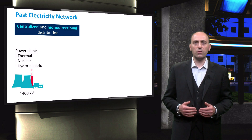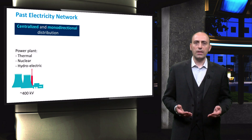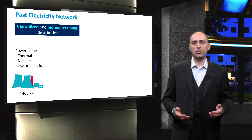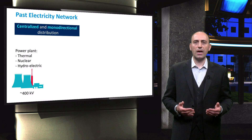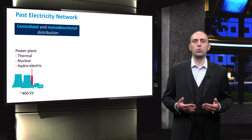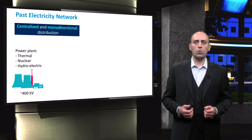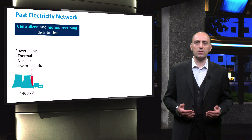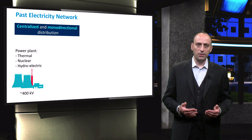At one end of the electricity grid we have the power plants, which are the only structures generating electricity. They can be divided into three major groups. First, the thermal power plants — these plants generally burn gas or coal and boil water to superheated steam, which in turn runs a turbine. The second group are the nuclear power plants, which use the heat released by the fission of radioactive elements to generate electricity. Finally, there are the hydroelectric power plants, where the kinetic energy of falling water drives turbines generating electrical power.